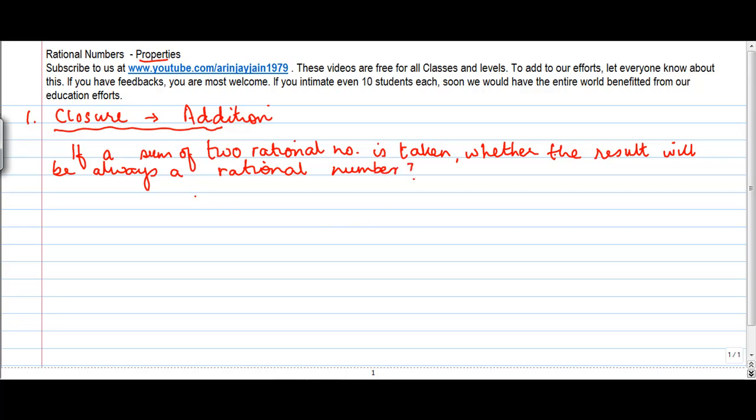Let me take two rational numbers. Let me take 2 upon 7 plus minus 3 upon 11. I have a rational number in hand, two of them, and I need to find out whether their sum is also a rational number.